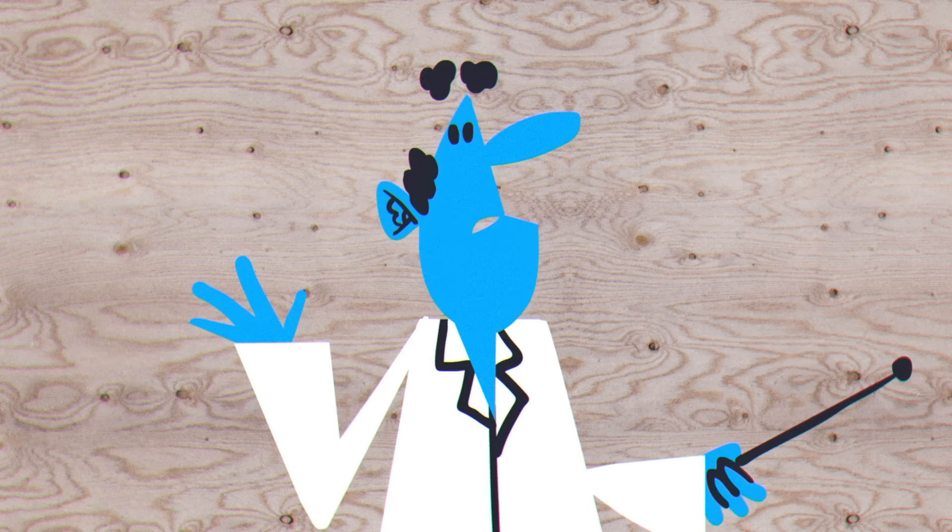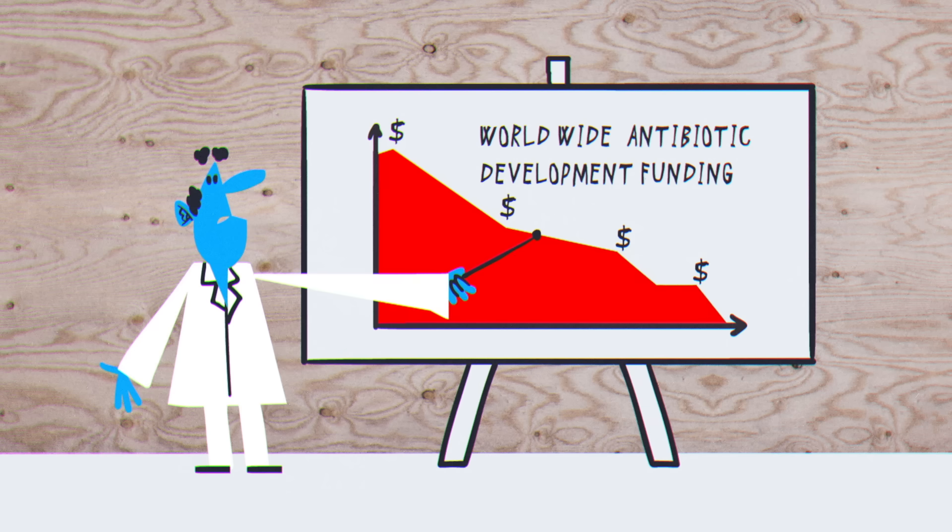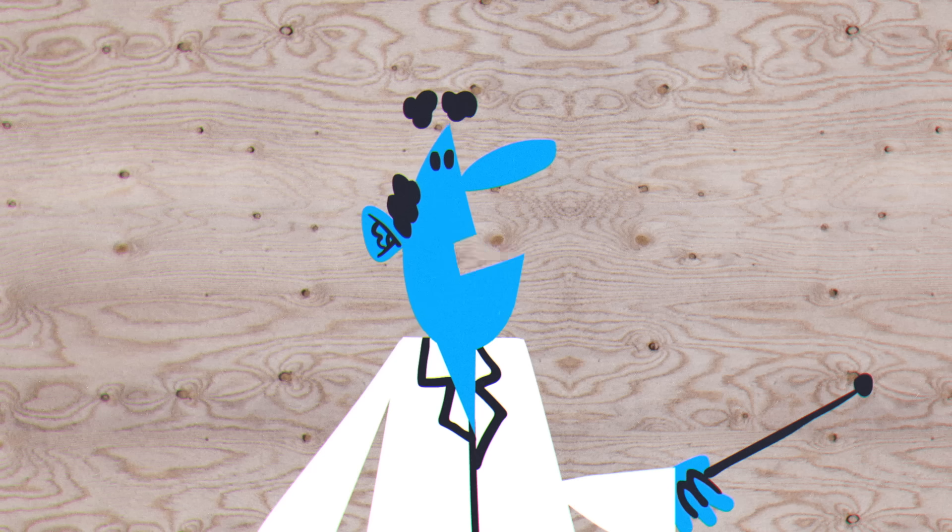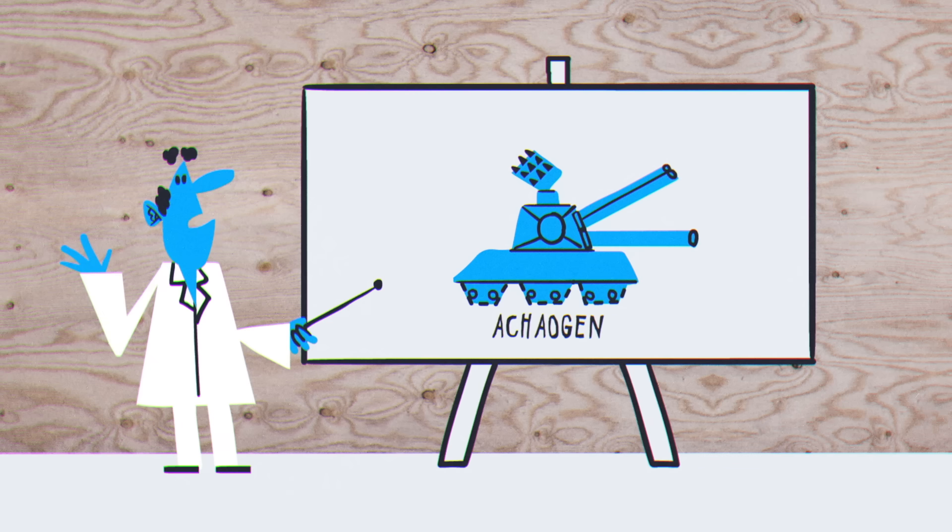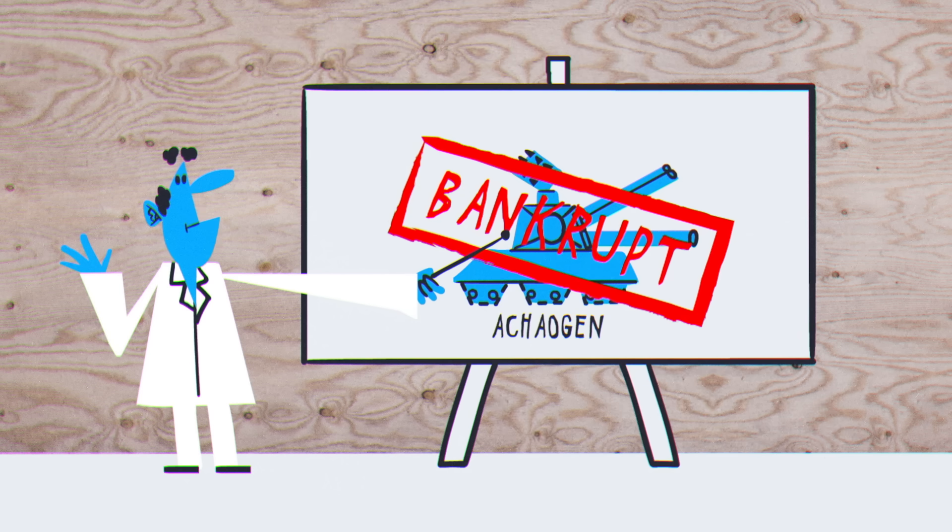The biggest challenge to all these approaches is funding, which is woefully inadequate across the globe. Antibiotics are so unprofitable that many large pharmaceutical companies have stopped trying to develop them. Meanwhile, smaller companies that successfully bring new antibiotics to market often still go bankrupt, like the American startup Achaogen.